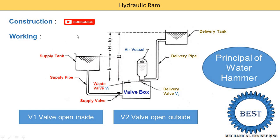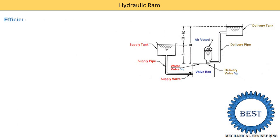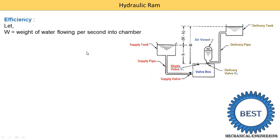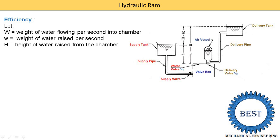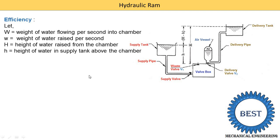Next, we find out the different efficiencies. Before doing so, we need to learn the different parameters. Capital W is the weight of water flowing per second into the chamber — the water supply in larger quantity. Small w is the weight of water coming out in smaller quantity. Capital H is the height of water rise from the valve box to the delivery tank — the maximum height. Small h is the height of the water level in the supply tank above the valve box — the smaller height. Where quantity is larger we use capital letters; where quantity is smaller we use small letters.